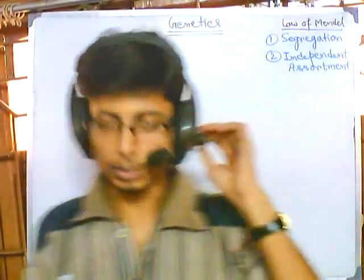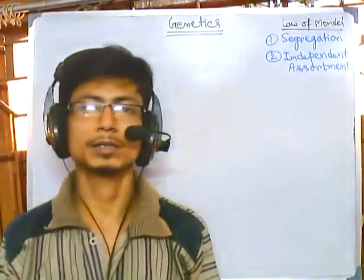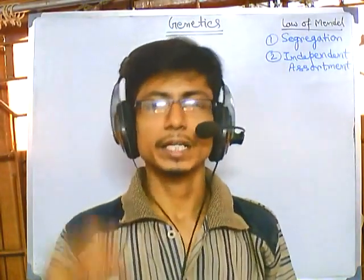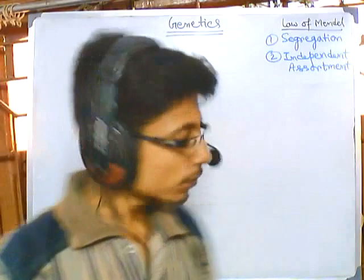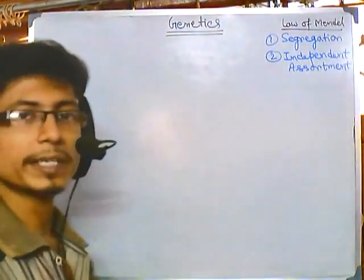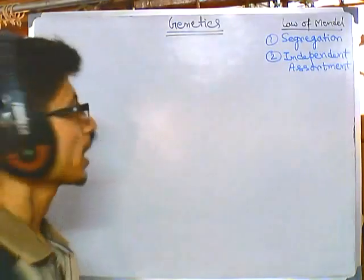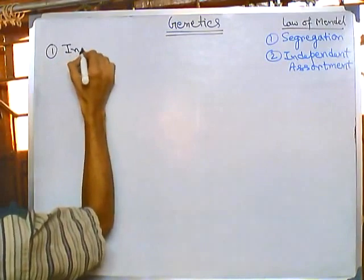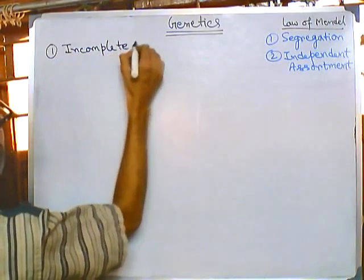Welcome back. We are talking about advanced genetics. We have discussed the introductory part about non-Mendelian genetics and the different types of non-Mendelian inheritance patterns. From this video, we'll be talking about each of the different non-Mendelian inheritance patterns. Let's first talk about incomplete dominance and codominance.